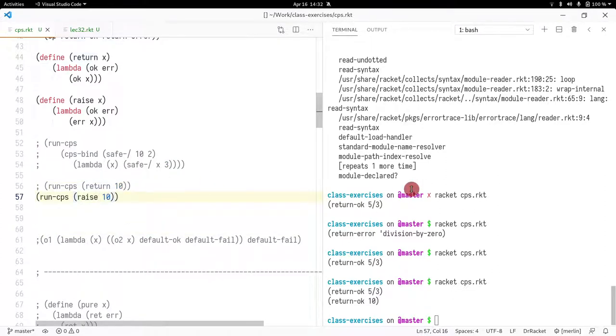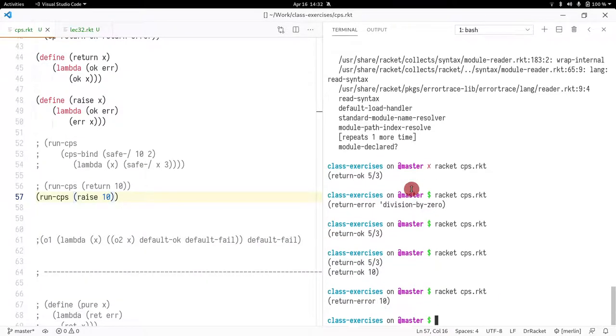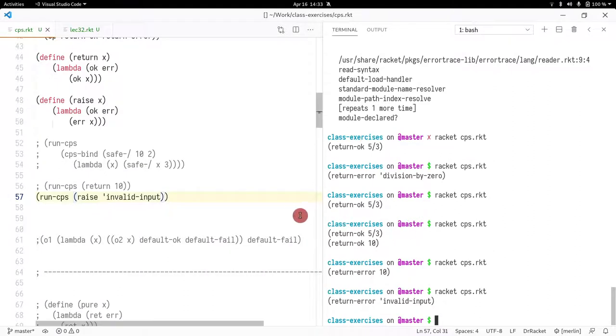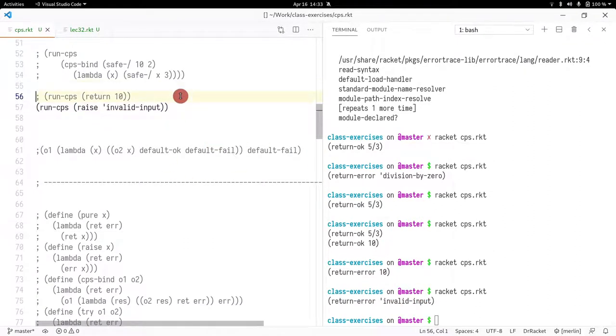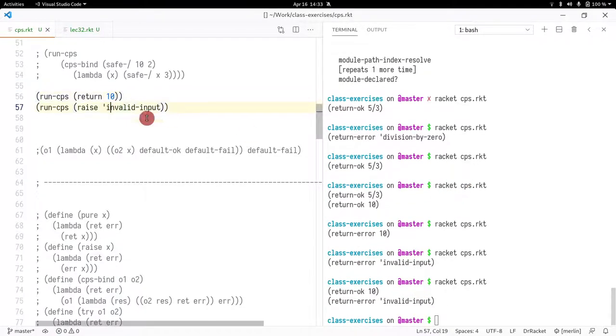So now instead of returning 10, if I want to raise 10, it returned an error 10, right? Usually when it's an error, you want to say what's going on. So error invalid input. It's any string I want. In this case, I just wanted to say I got an invalid input. In the previous example, I want to say I want to return number 10. But of course here it could be anything.